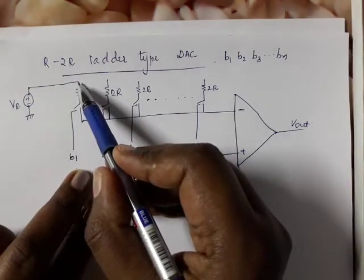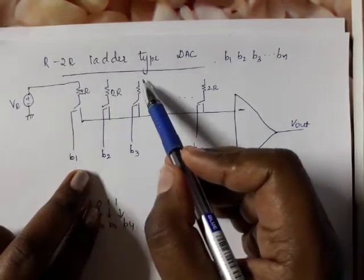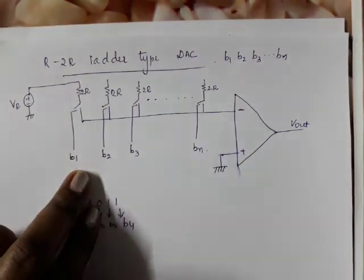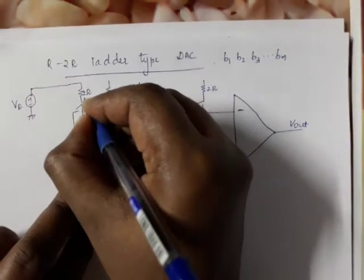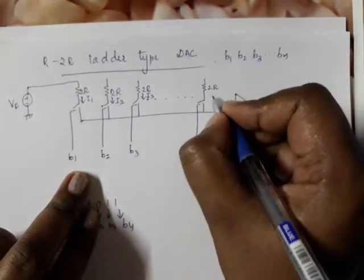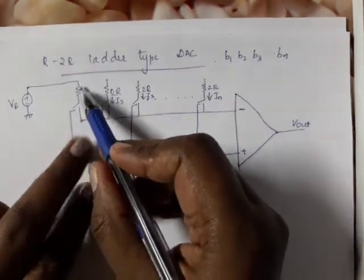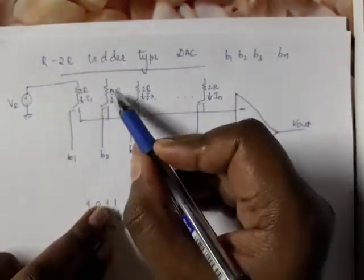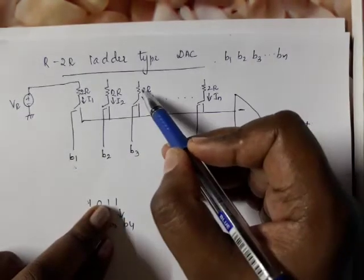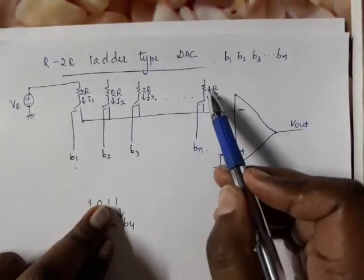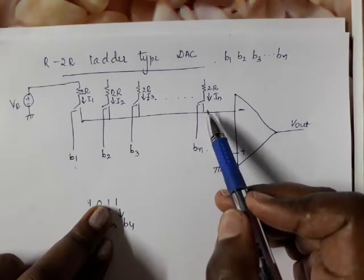I1 is the current flowing through the first switch, I2 through the second switch, I3 through the third switch, and In is the current flowing through the Nth switch.